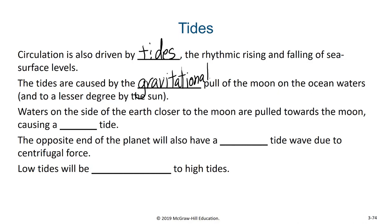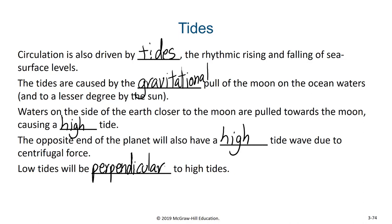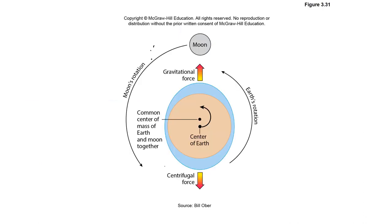Waters on the side of the earth closest to the moon are pulled towards the moon, causing a high tide. The opposite end of the planet will also have a high tide due to centrifugal force, while low tides will be perpendicular to high tides. Looking at the diagram of the earth and the moon, we can see gravitational force makes a high tide in the direction of the moon, and centrifugal force makes a high tide on the far side of the planet.